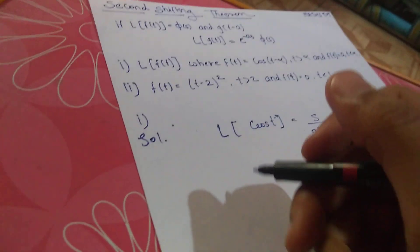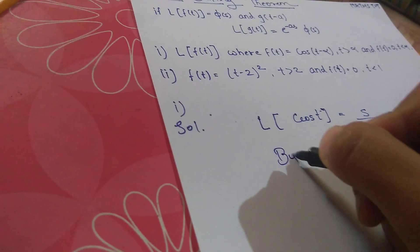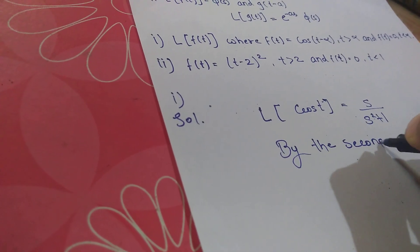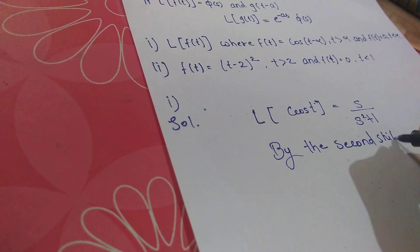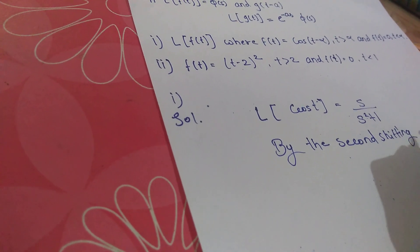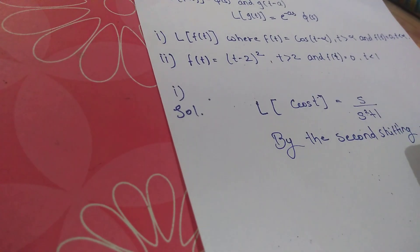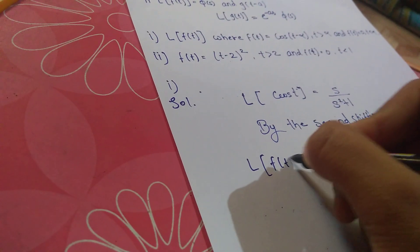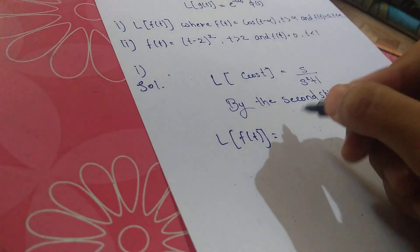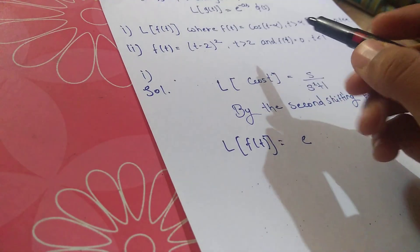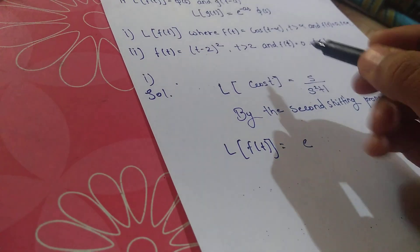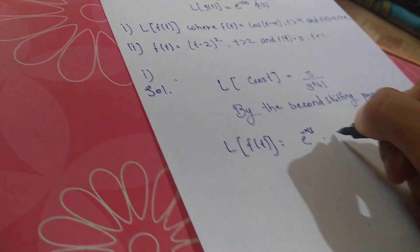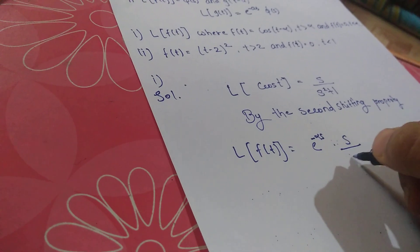So by the second shifting property, Laplace of f(t) equals e raised to minus as. Here a is my alpha, so e raised to minus alpha s times s/(s^2+1).